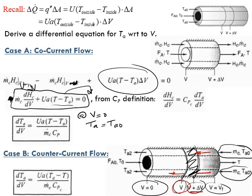For the counter-current case, the initial condition is the problem: at V = 0, I do not know the value of Ta, because I know Ta0 at V = Vfinal (the inlet of the heat transfer fluid), not at V = 0. I can call the unknown value Ta2, but I don't know its actual value — I don't know up to what temperature it was heated or cooled.